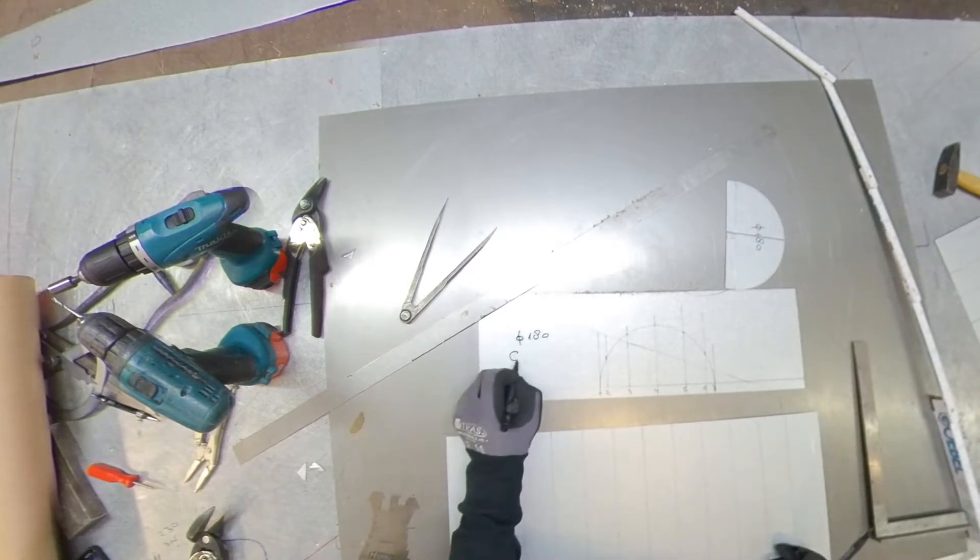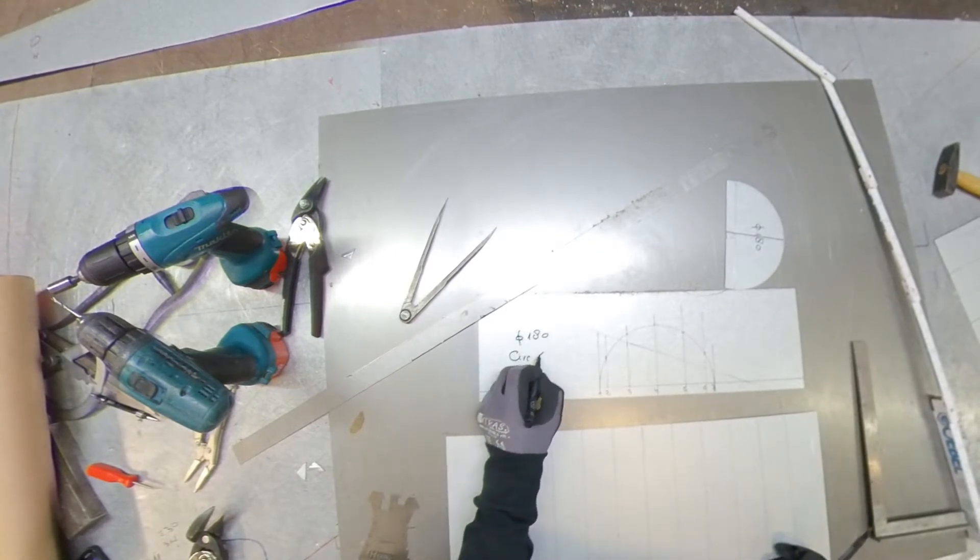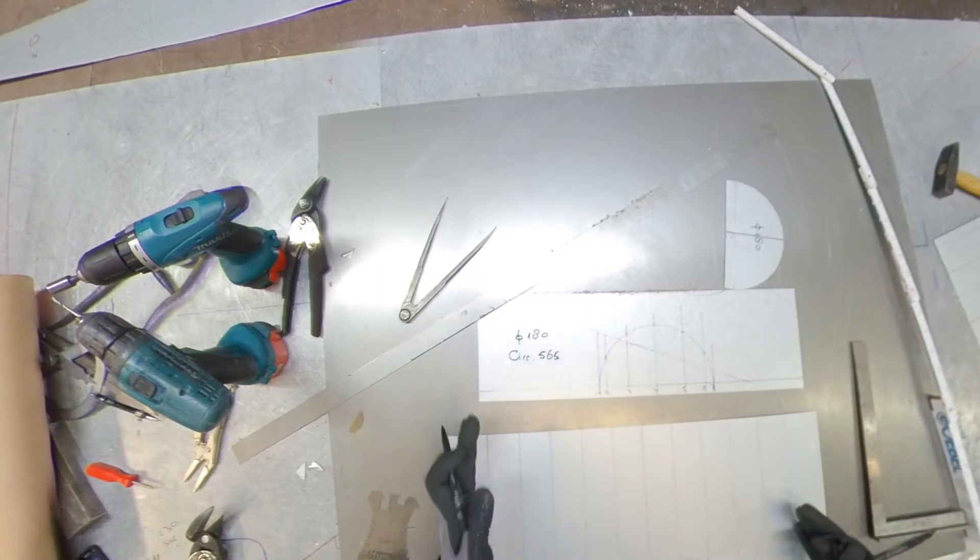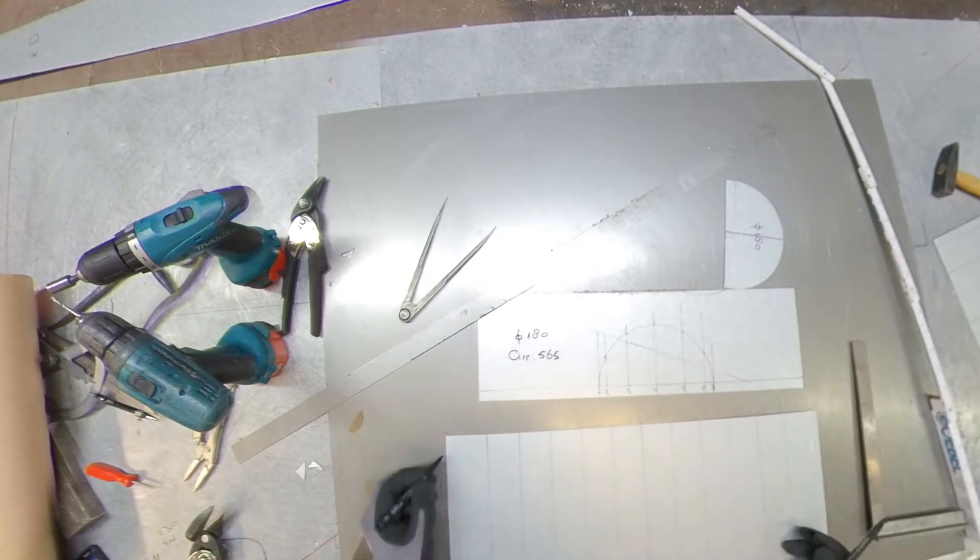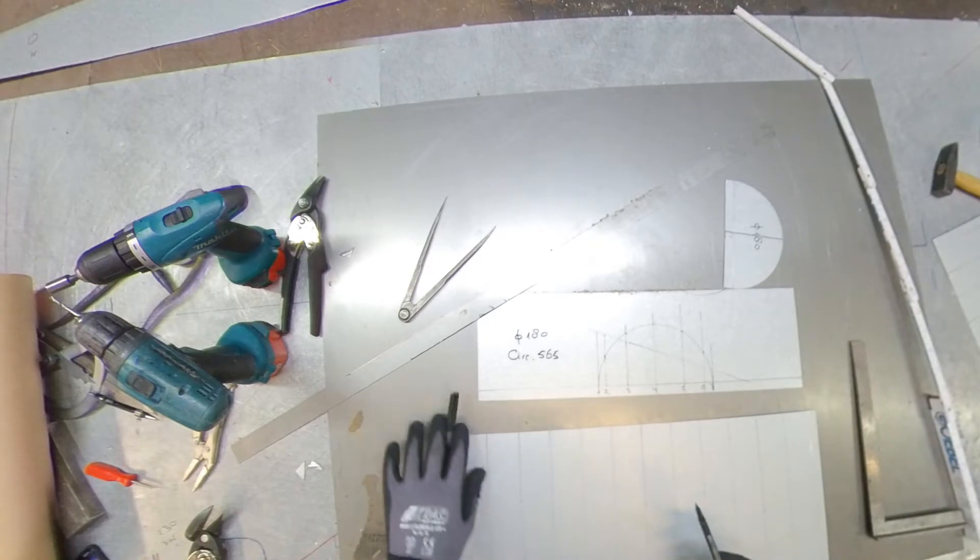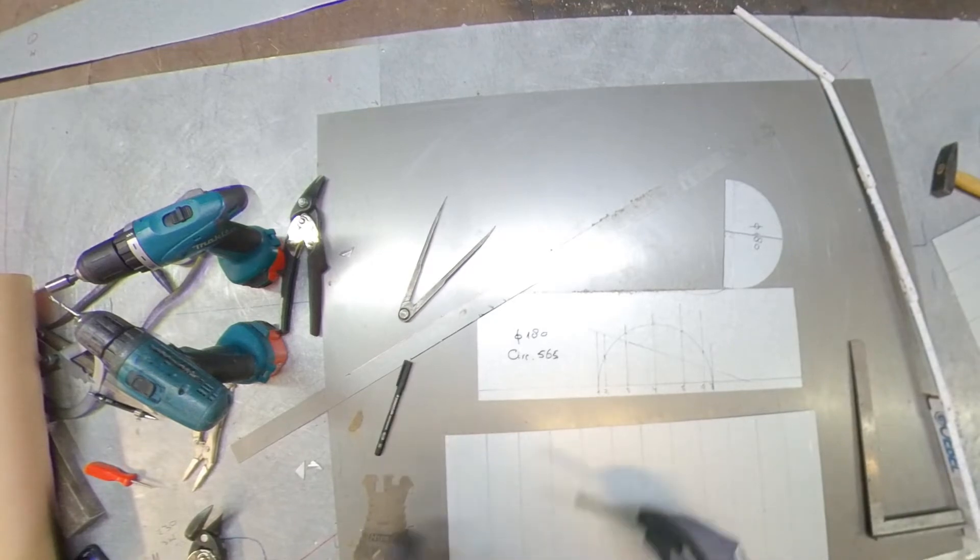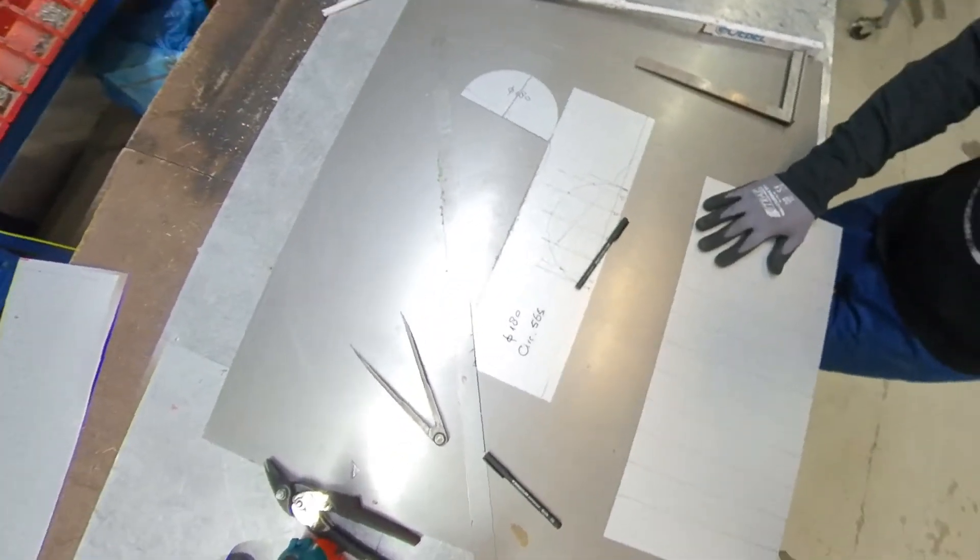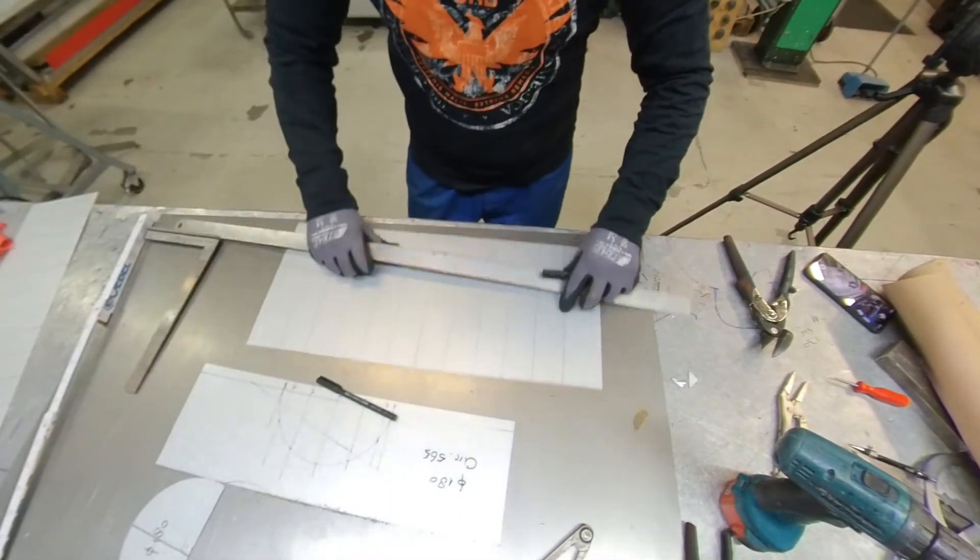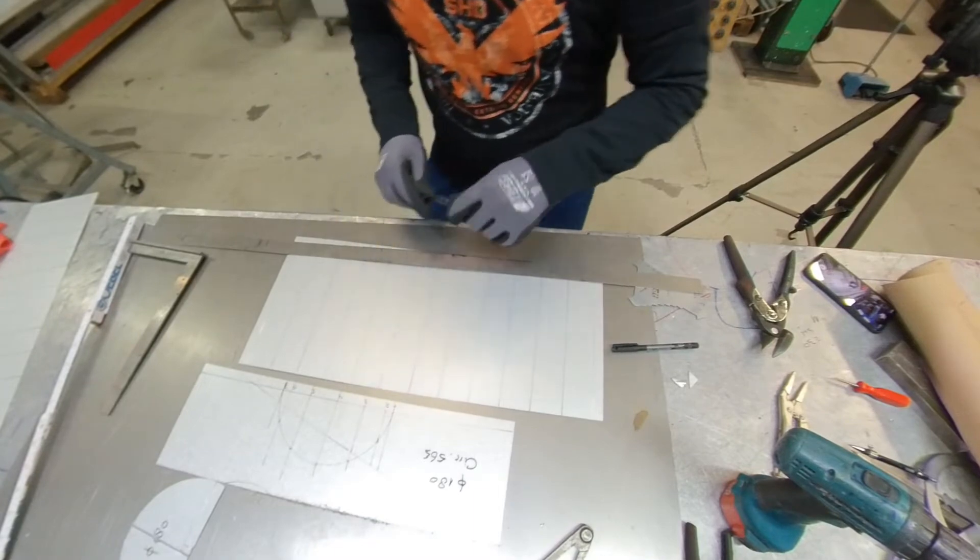So this is diameter 180, circumference 565, then I divide this in 12 pieces. Here got our overlap, 15 mil one side and 15 millimeter on the other side. So then I put here the working line. As always, we always need a line to work from somewhere.